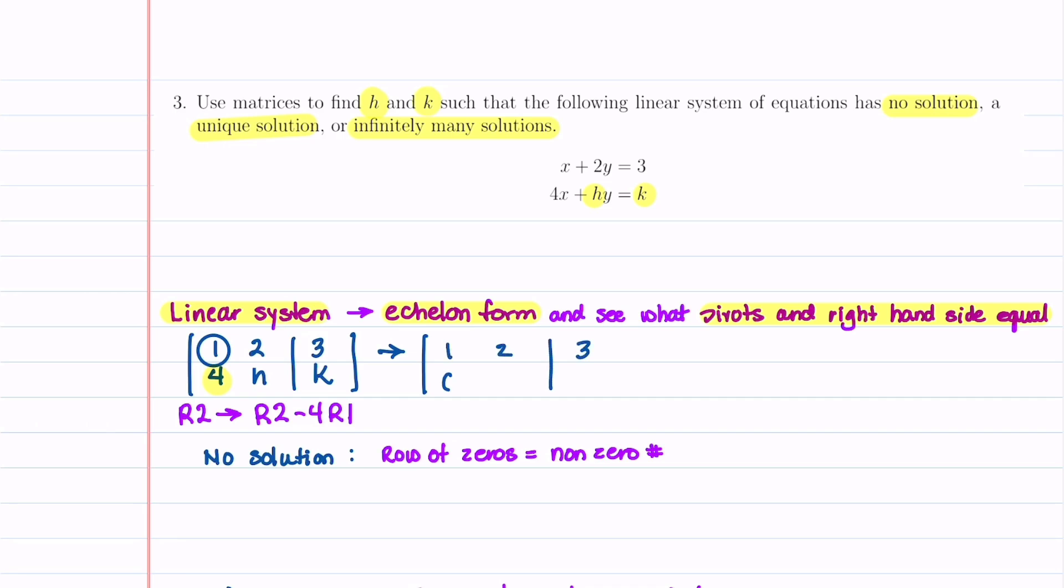The top row stays the same. And then we're going to pick up a 0, we're going to pick up an H minus 4 times 2, which is an 8, and then a K minus 4 times 3, which is minus 12. And this is the matrix that we're going to have to analyze.